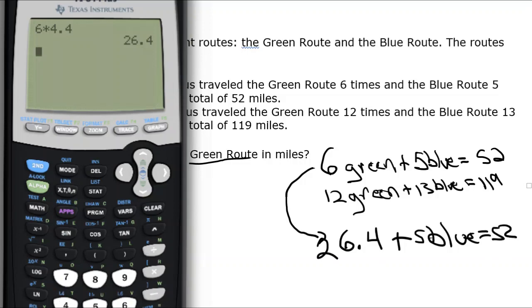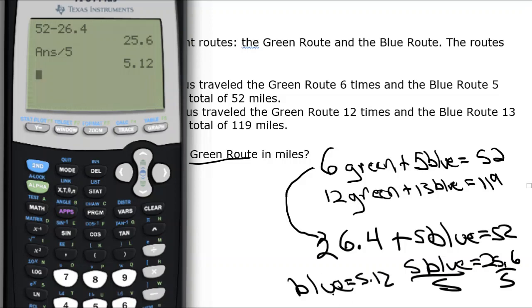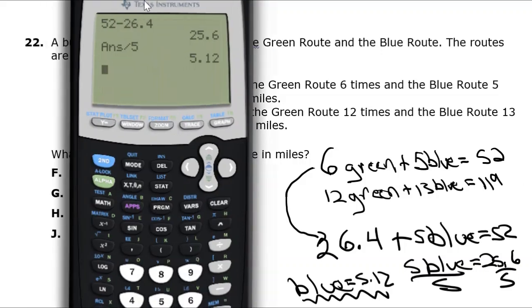So it's 26.4 plus 5 blue equals 52. I need to subtract 26.4 from both sides. So 52 minus 26.4 gives us 25.6. So 5 blue equals 25.6. Divide both sides by 5. And this gives us blue is equal to 5.12. Right now we're using guess and check and we don't know that yet. We're pretending we don't know what the right answer is. So right now we're checking and the first equation gave us blue is equal to 5.12.